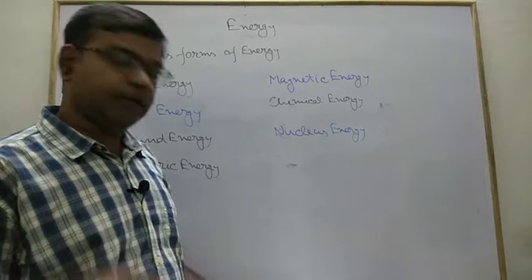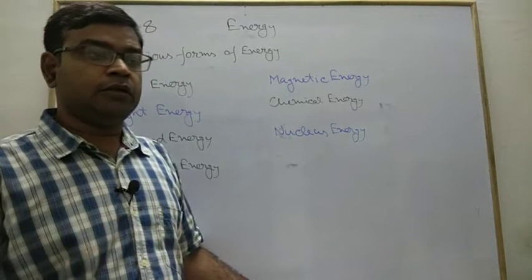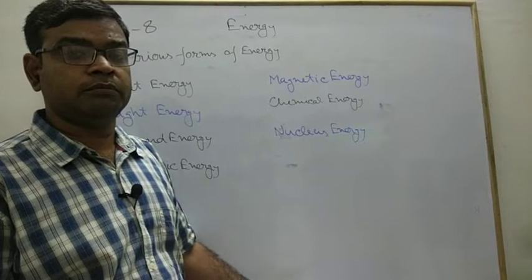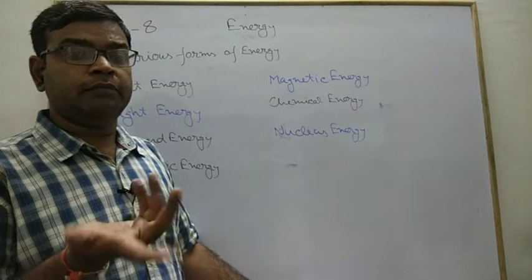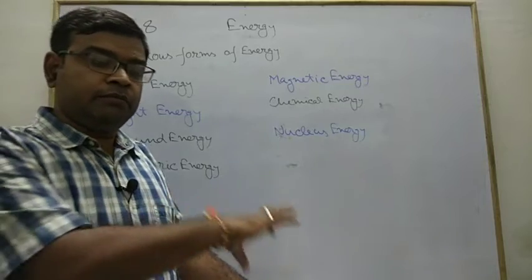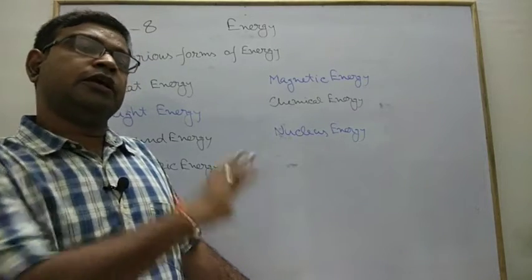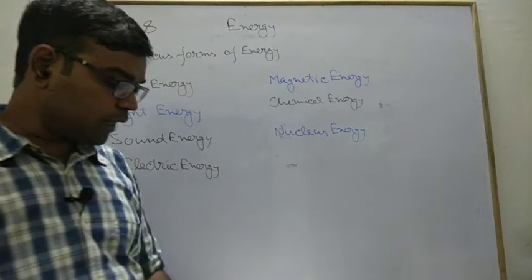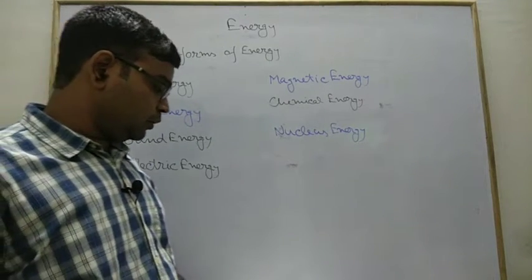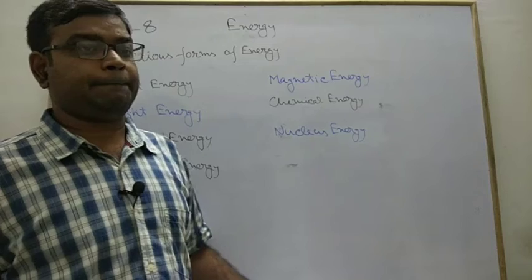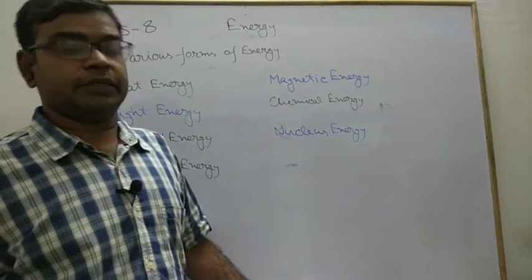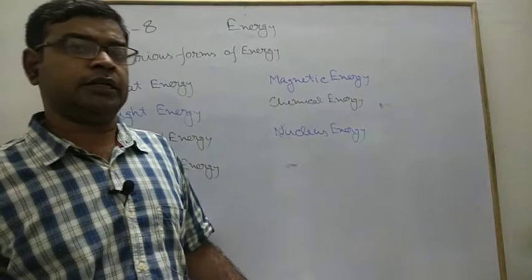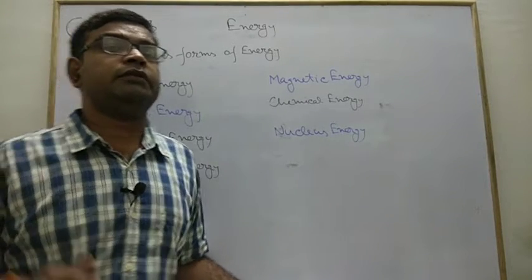Similarly, we have chemical energy into light energy. Your electric cell, we use cell to glow the bulb. And in cell, chemical energy is used. In bulb, light energy is produced. So likewise, you must read all these topics. Next day we discuss law of conservation of energy and sun is ultimate source of energy. That's all for today. Thank you.